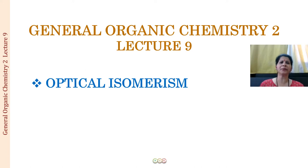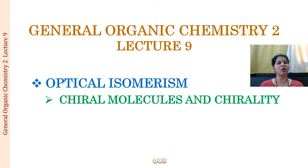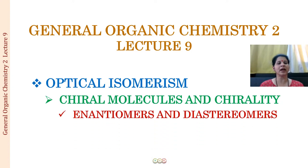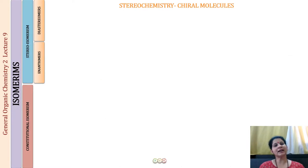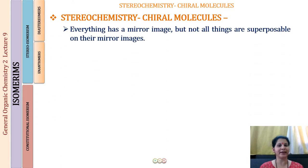What are we going to discuss in this lecture? We will start first with what are chiral molecules, then we will discuss what are enantiomers, and what are diastereomers. Let us begin with the study of chiral molecules, starting first with what are chiral objects.